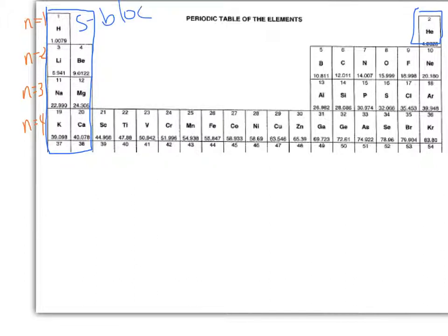I've identified the s block. We've seen this before. That means as we're moving along the periodic table, we are filling s electrons. Over here, let's use orange. This is the p block, so we're filling p electrons over here.